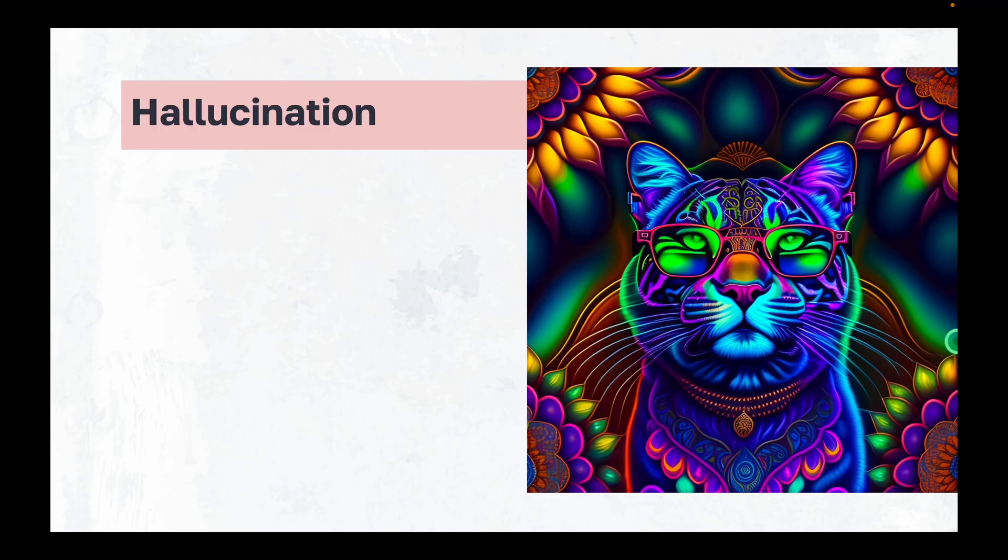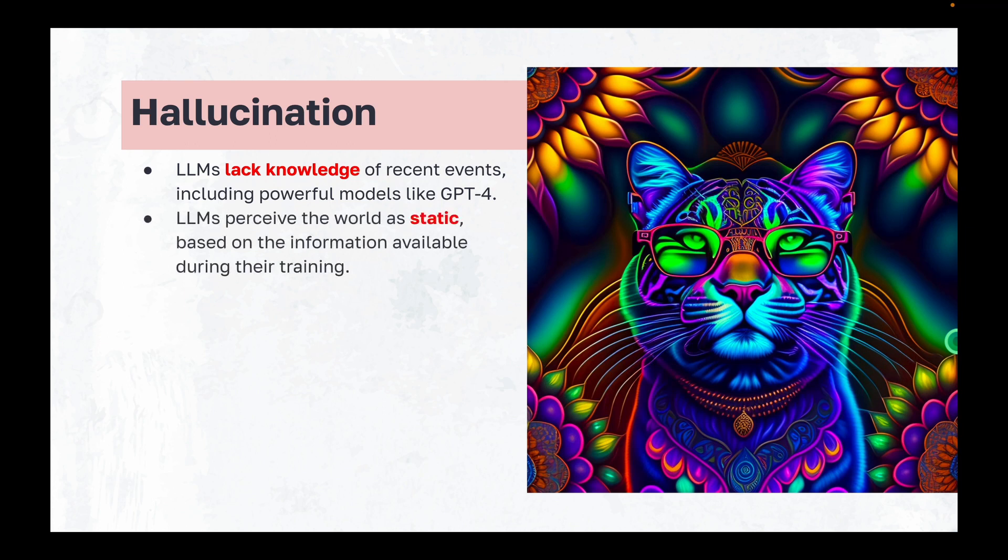The first problem is Hallucination. Large language models including powerful ones like GPT-4 struggle with keeping up with recent events and recent updates. LLMs view the world as if it were frozen in time, only aware of the information available during their training. This becomes problematic for use cases that require up-to-date information or specific datasets.